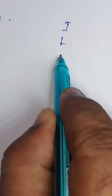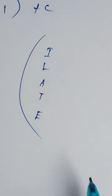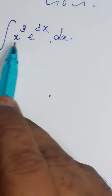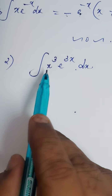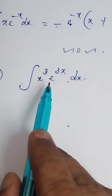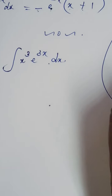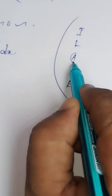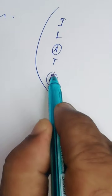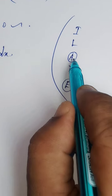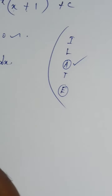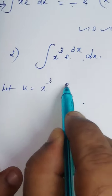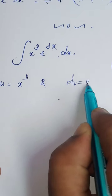We start with ILATE. Since it is of the form combining algebraic as well as exponential, it is better to go for Bernoulli's formula. ILATE refers to Inverse, Logarithmic, Arithmetic, Trigonometric, and Exponential. Here x³ is Arithmetic and e^(3x) is Exponential. Arithmetic comes first, so x³ should be considered as u, and dv = e^(3x) dx.